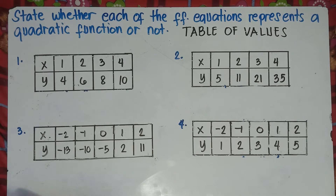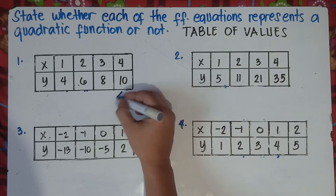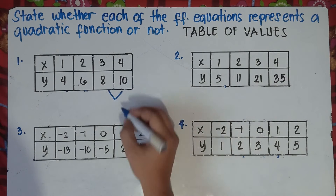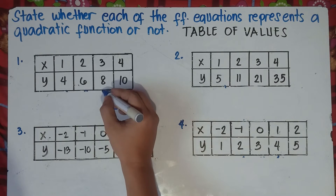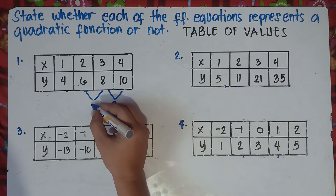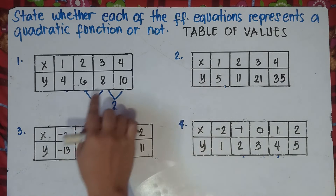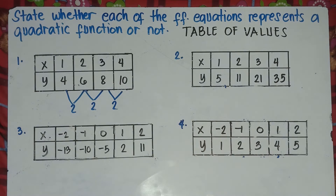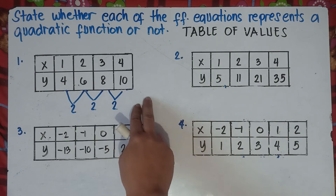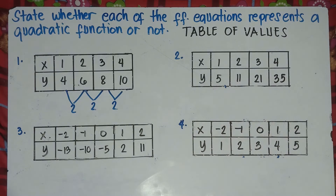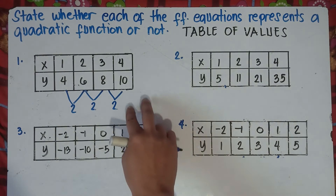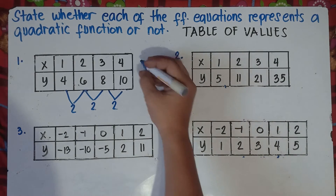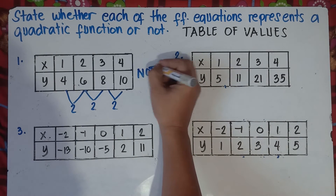Let's subtract the y values, right to left. 10 minus 8 is 2. 8 minus 6 is 2. 6 minus 4 is 2. Since all the first differences are the same, this table of values is a linear function — not a quadratic function. So the answer for number 1 is 'not a quadratic function.' In a quadratic function, you need to get the second difference, not just the first.